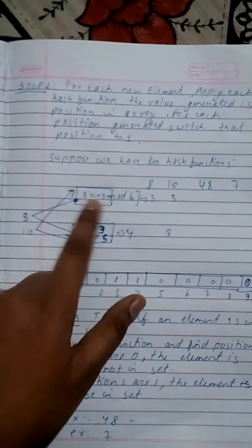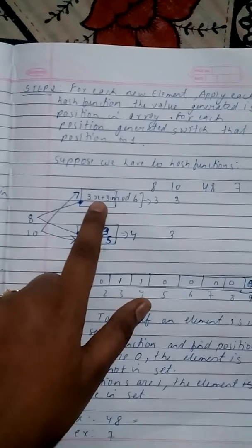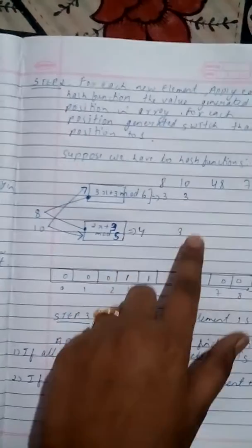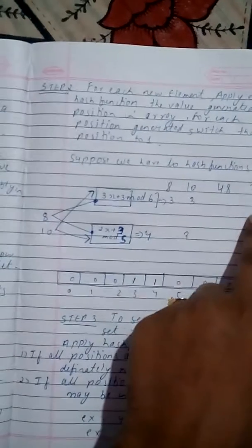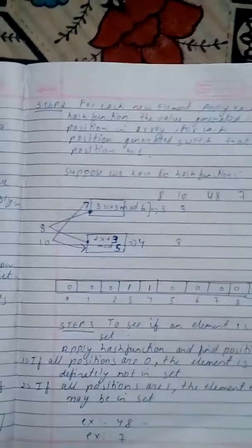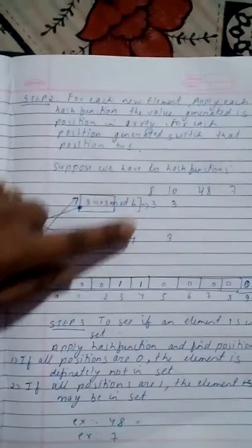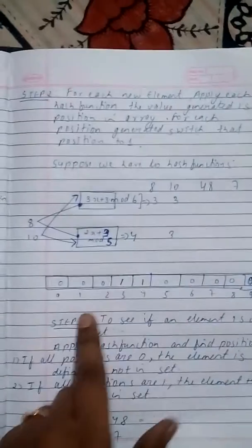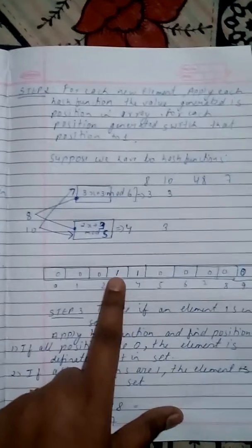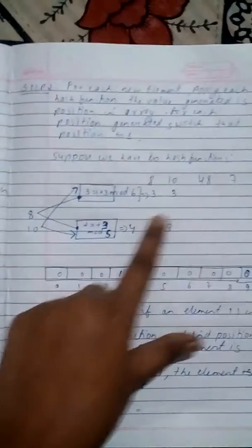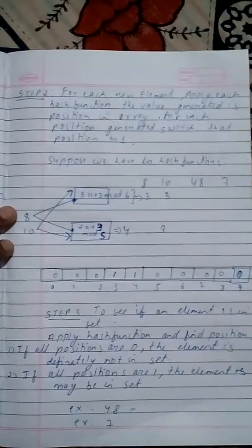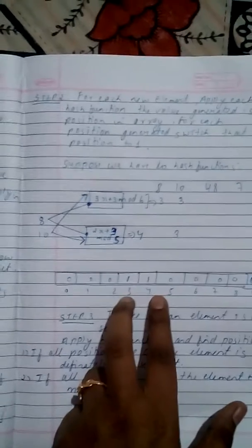For 8, if we are putting the value of x, we are getting 3 times 8, that's 24, plus 3 is 27. 27 mod 6 gives remainder 3. For the same, we are getting 4. And for 10 we are getting 3 and 3. The remainder we are getting is 3, 4, so put the bits to 1. For 10 we are getting 3 and 3, so put to 1, there is no need to do it again.